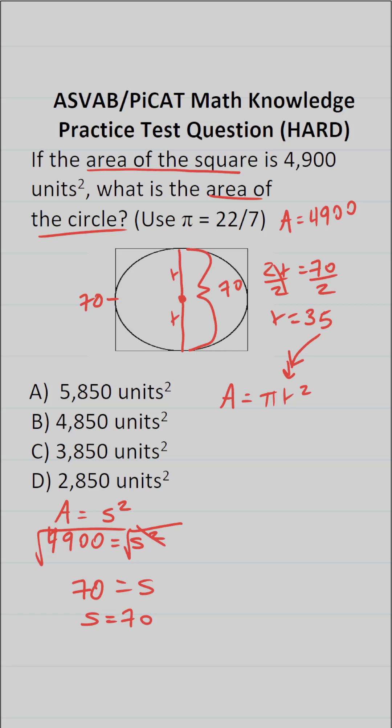So now that we know what the radius is, we can go ahead and plug it in. This becomes area equals, for pi, we're using 22 over 7. So this becomes 22 over 7 times 35 squared. 35 squared is the same thing as 35 times 35. And I'm going to do that off to the side.